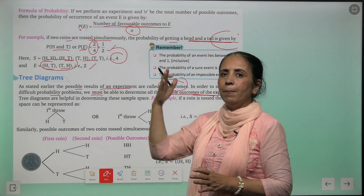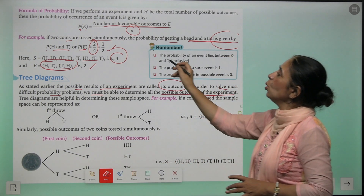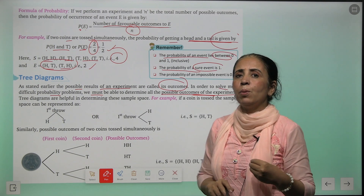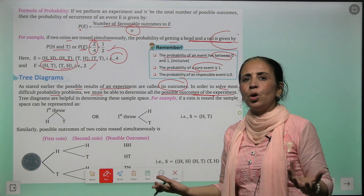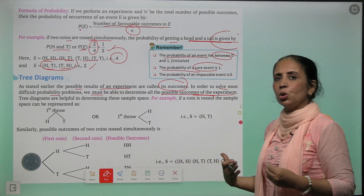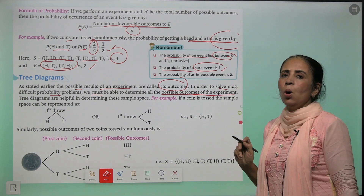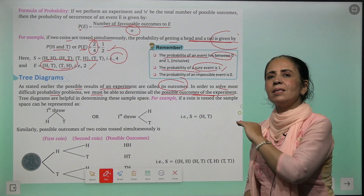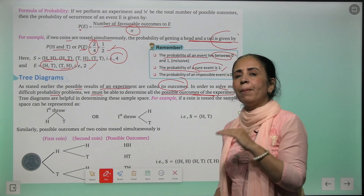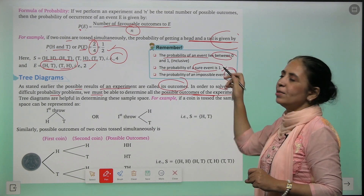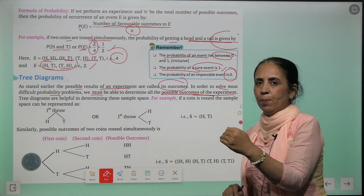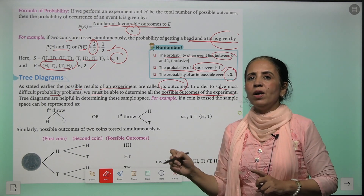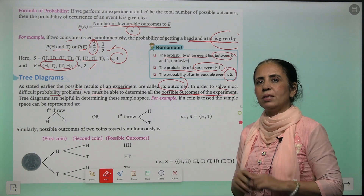Always remember: probability exists between zero and one. If you are sure ki ye hona hi hai — jaise today is Saturday and tomorrow is Sunday — that is a sure event, and its probability is always one. But if mahi ne bola tomorrow is Monday — that is totally impossible — aisa event ho hi nahi sakta, and in that case its probability is zero. So probability ki value hamesha zero aur one ke beech mein exist karegi.